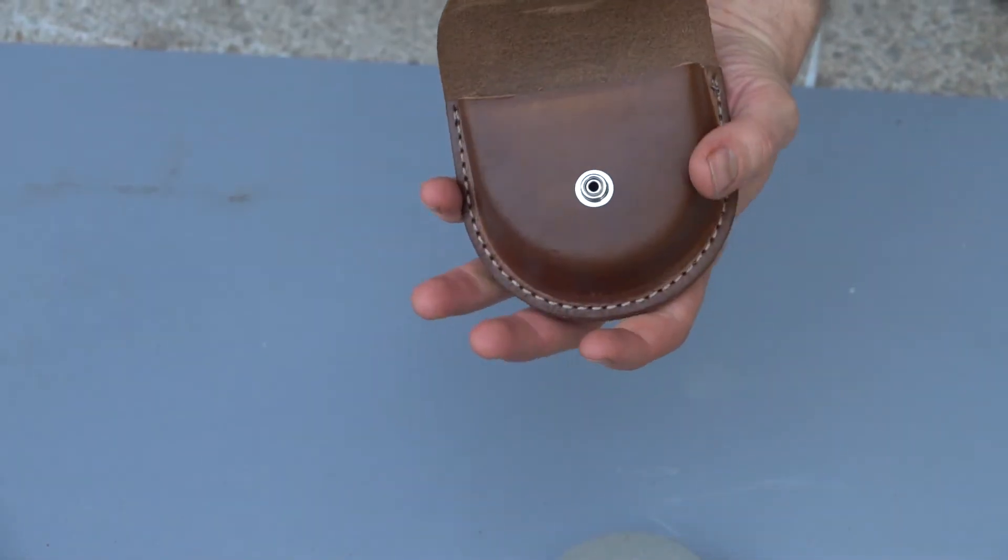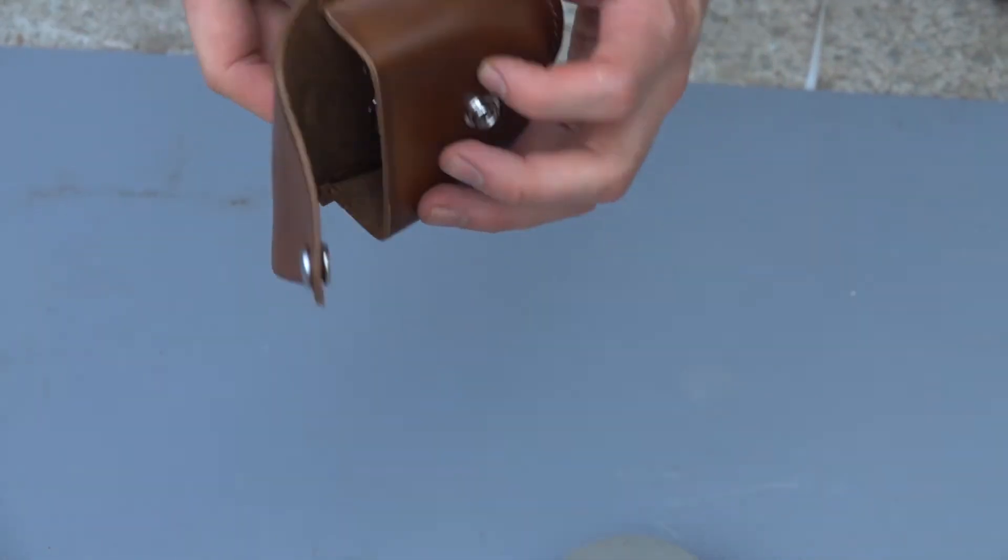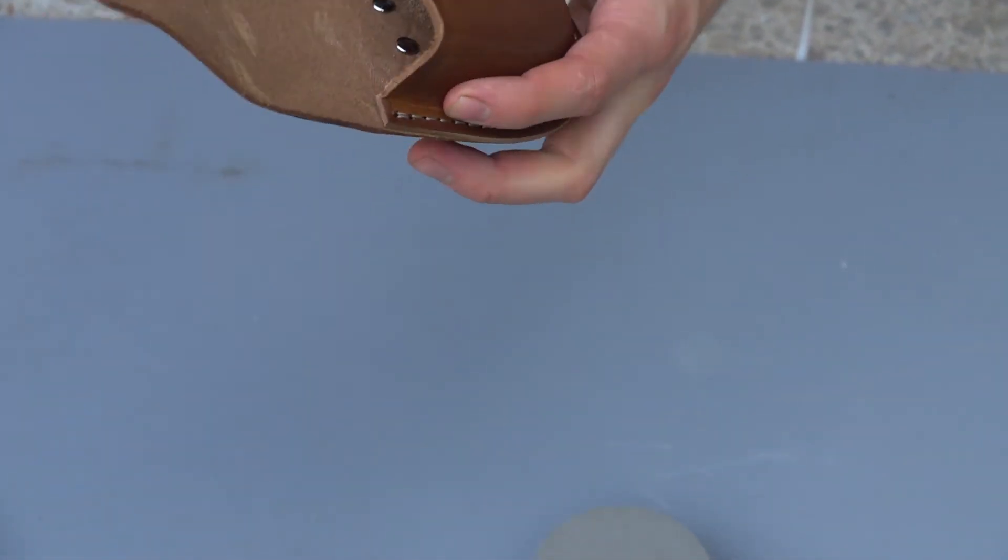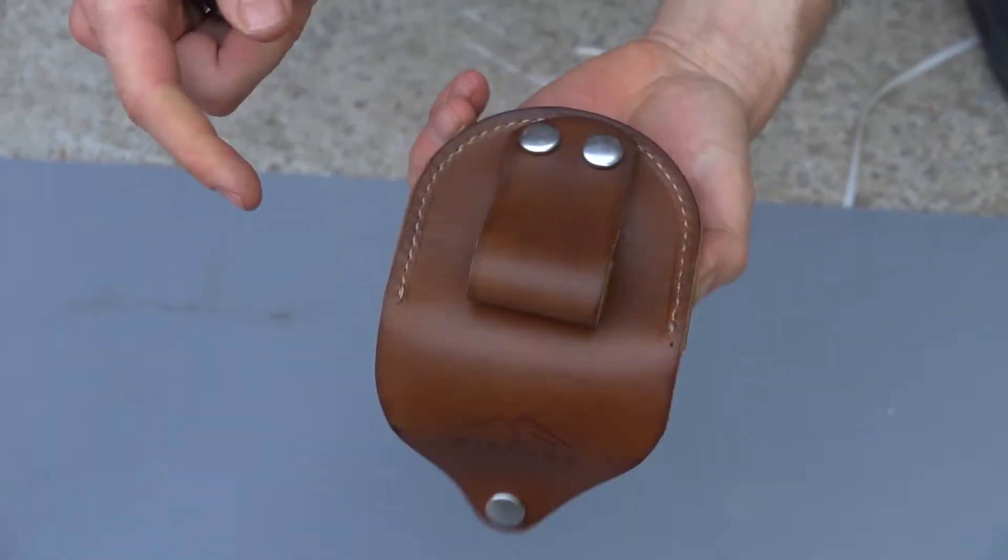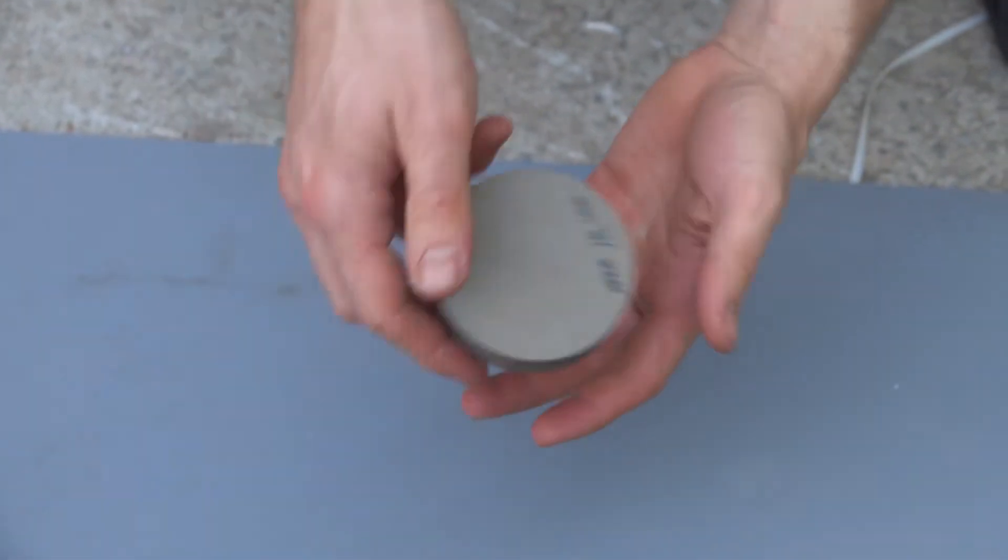Very nice design we have here. This is made out of vegetable tan leather in the USA. So let's take a look at these pucks.